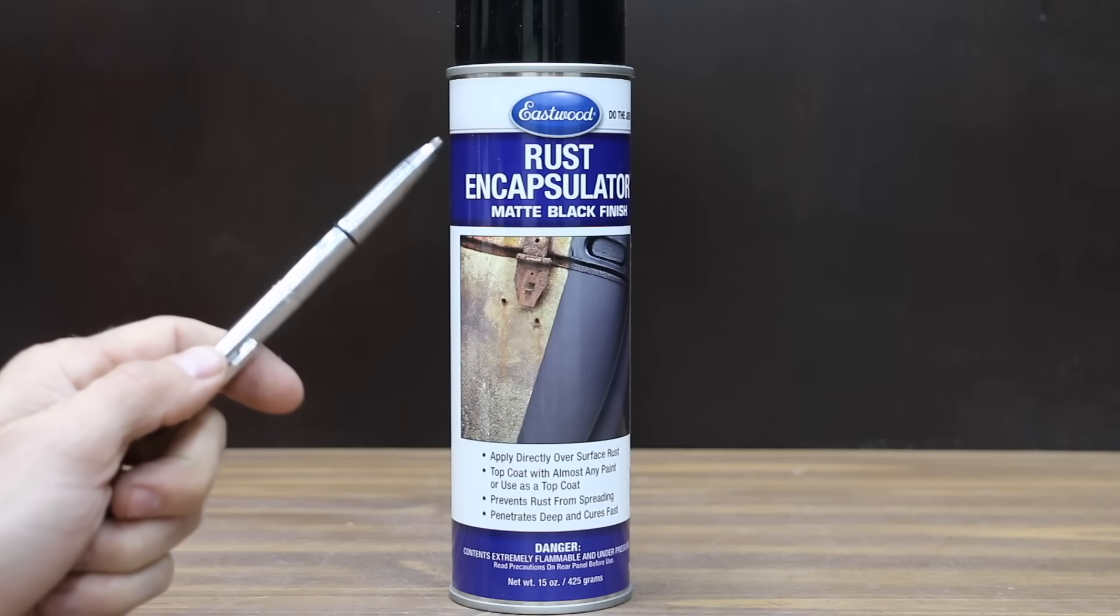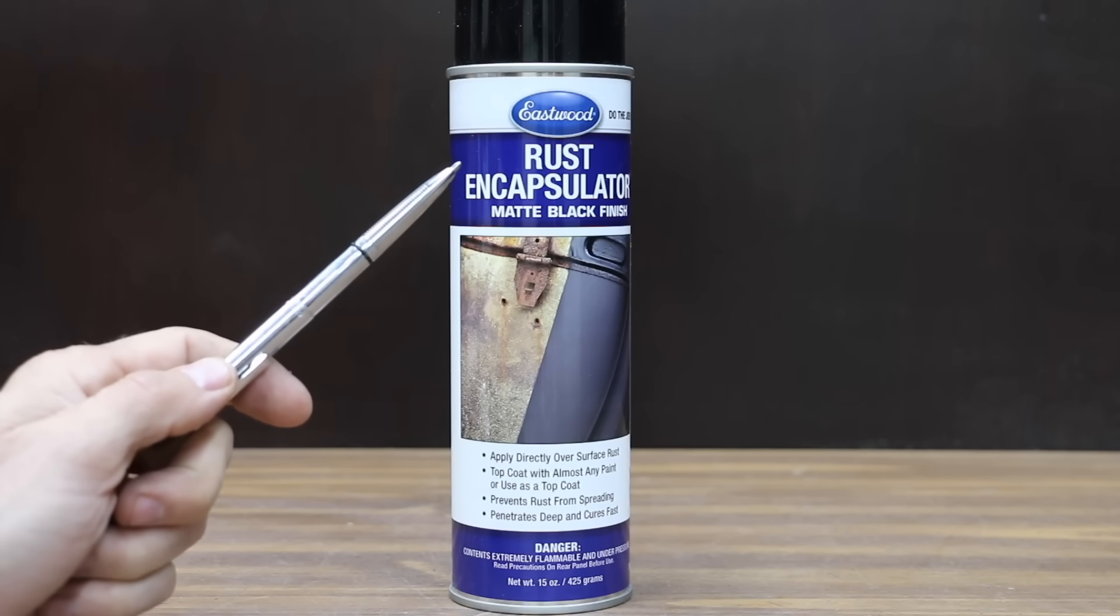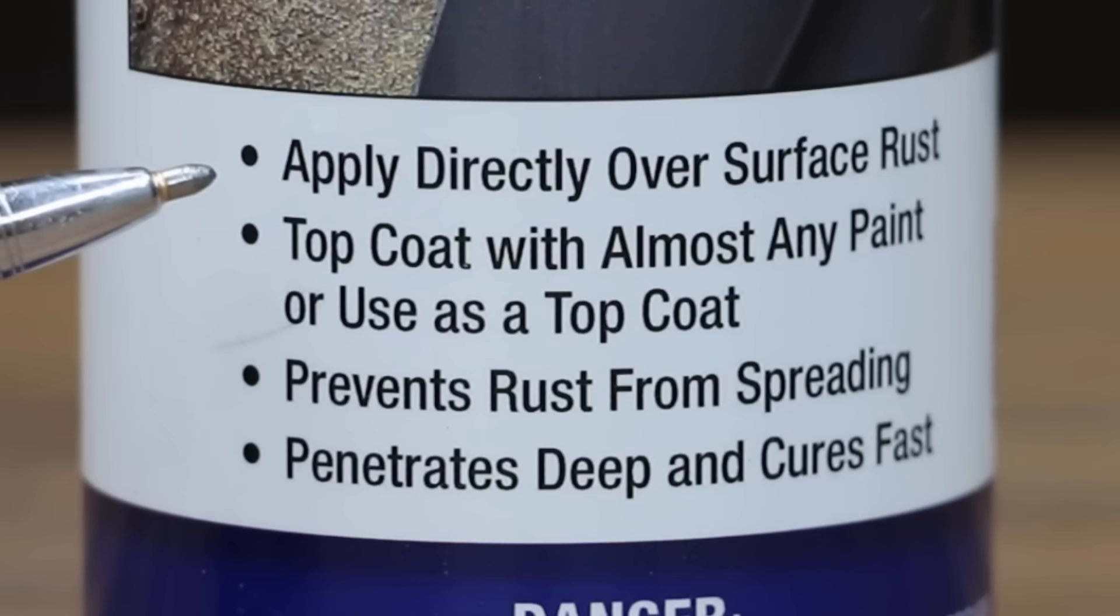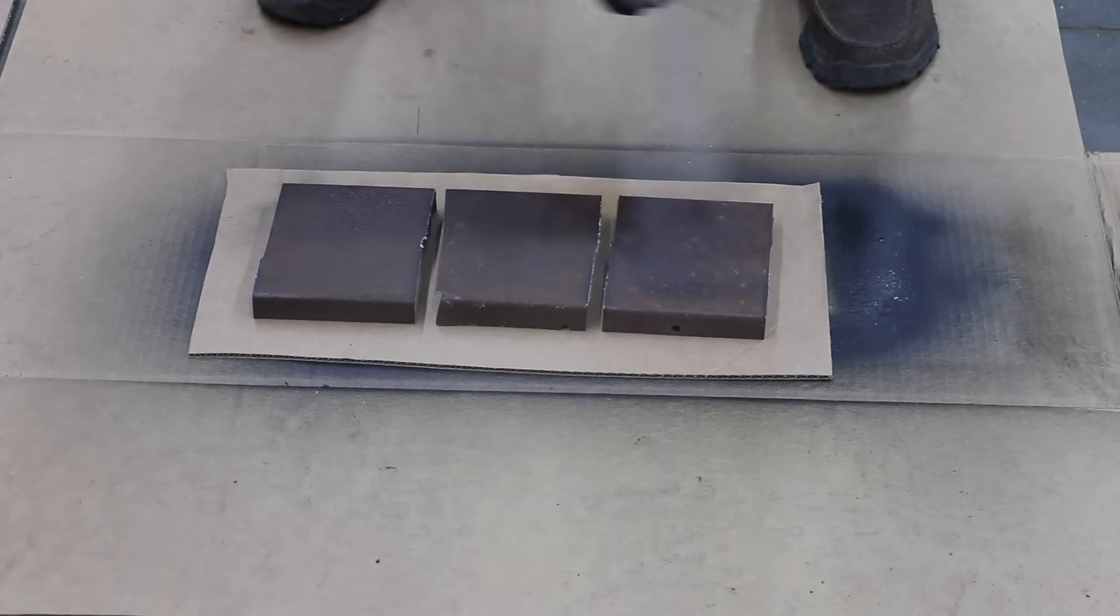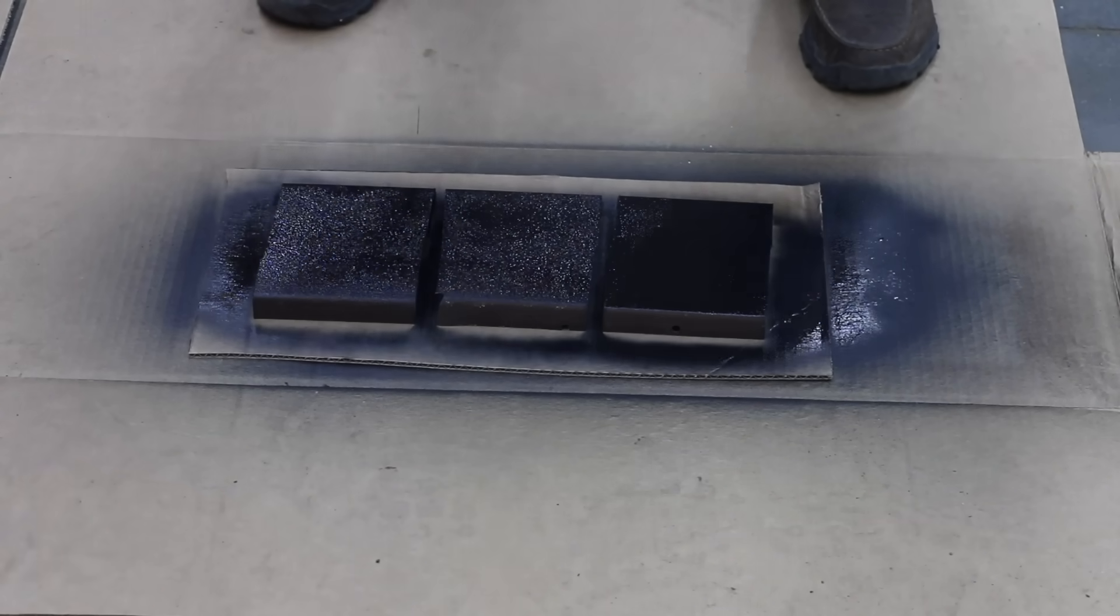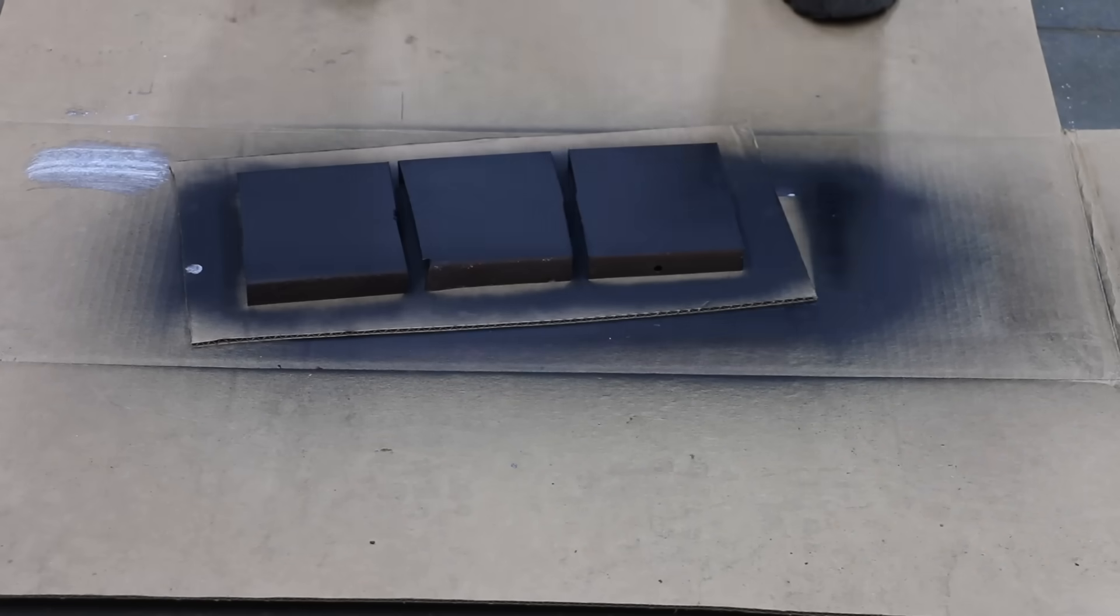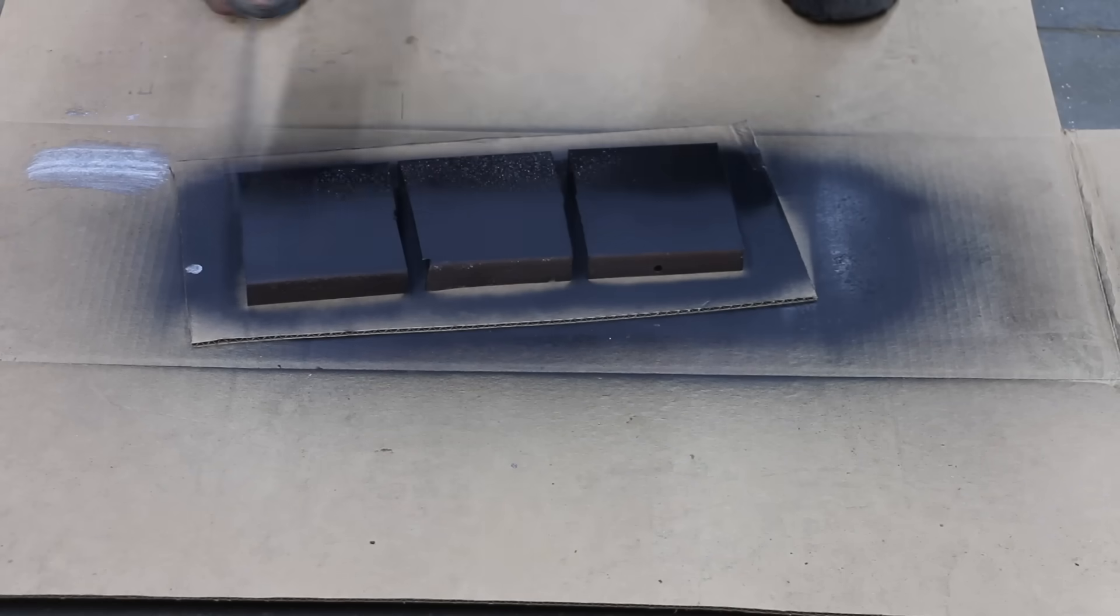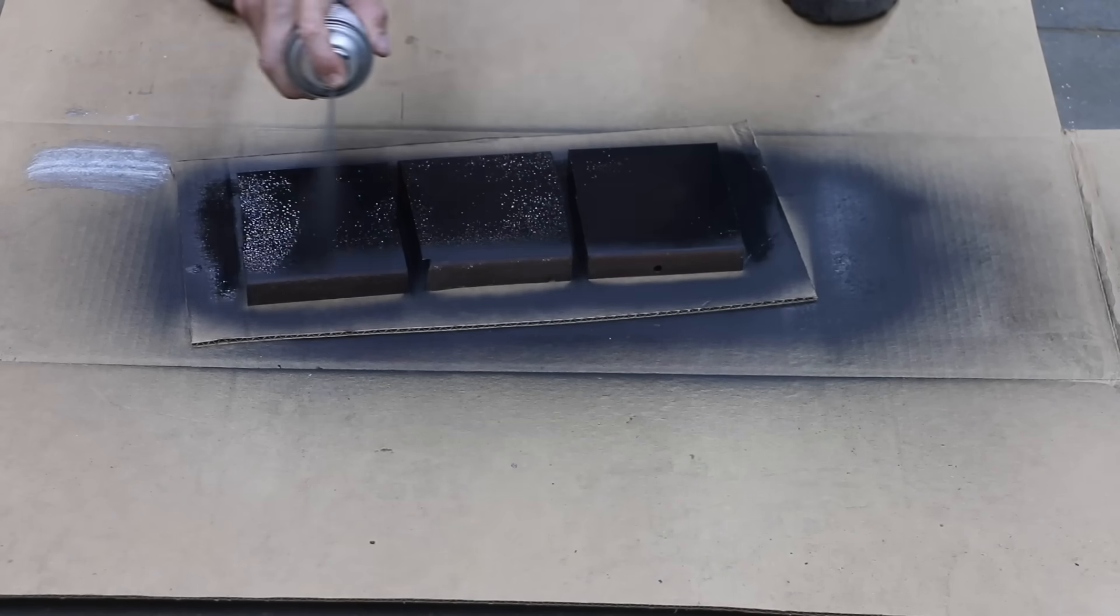At a price of $30 for 15 ounces or $2 per ounce is this Eastwood Rust Encapsulator. Apply directly over surface rust. Top coat with almost any paint or use as a top coat. Prevents rust from spreading. Ensure that surface is free from all loose rust, scale, and paint. Hold can 10 to 12 inches from surface and apply medium coat to ensure maximum adhesion overlapping surrounding paint by at least 1¼ inches. The Eastwood is made in USA. After 2 hours, I applied a second coat of Eastwood Rust Encapsulator.